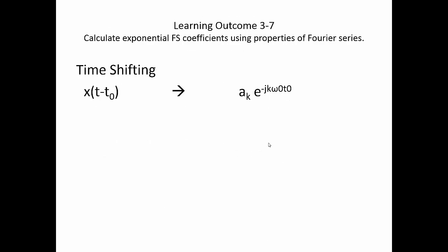Okay, go back to learning outcome 3-7, Fourier series, time-shifting property. If we have a time signal, there's a time-shifted version of x of t. The Fourier series coefficients would be the original Fourier series coefficients, multiplied by an exponential, e to the minus j k omega naught t naught.